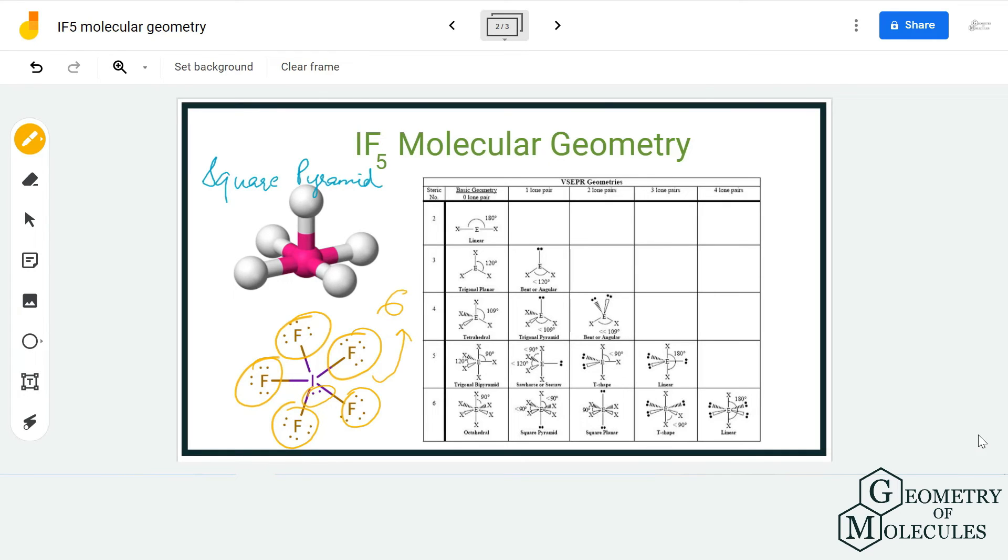Hence, the steric number is six, and there is one lone pair in this molecule, which corresponds to square pyramid molecular geometry. Therefore, the molecular geometry for IF5 molecule is square pyramid.